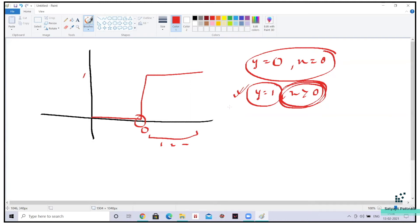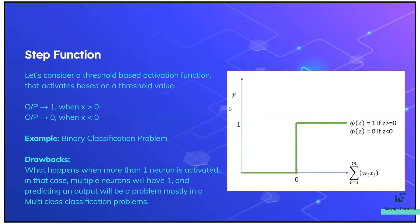The output is one when value is greater than zero, that is the threshold. And output is zero when the value is less than zero.